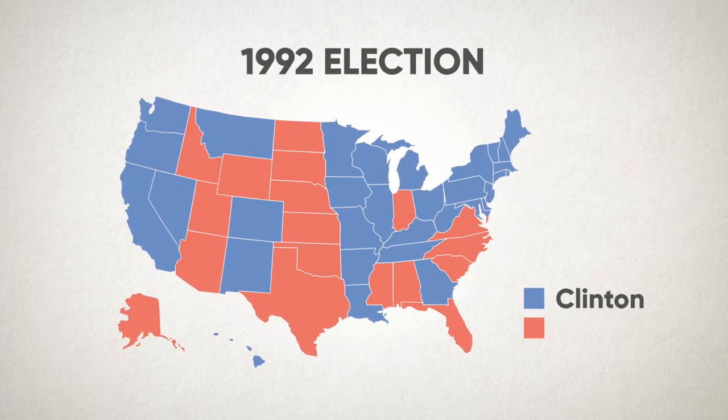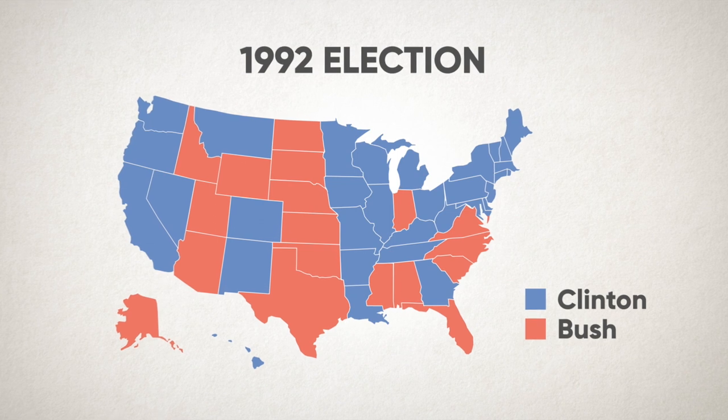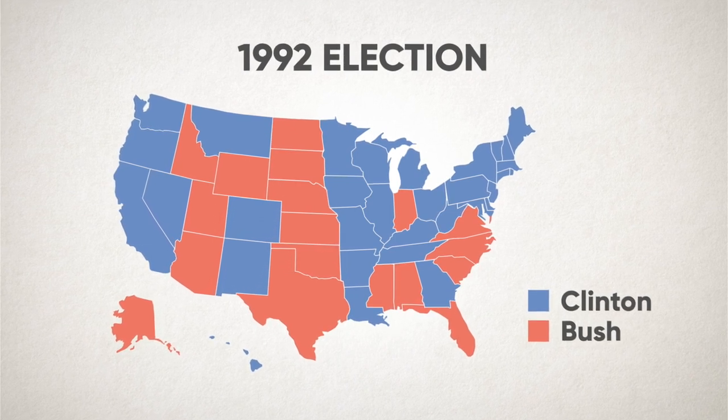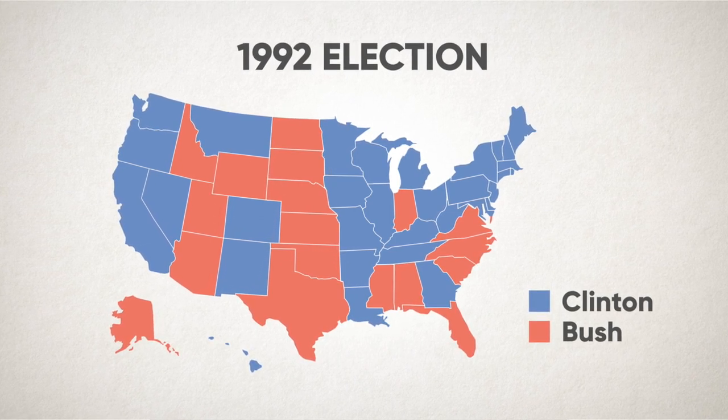Some people say that winner-take-all means that votes cast for losing candidates just don't matter. If all electoral votes go to one candidate, those who voted for the runner-up don't have their votes reflected in the national tally when the electoral votes are counted. Some argue that those voters are effectively ignored.